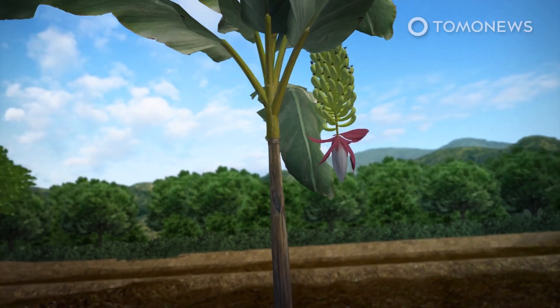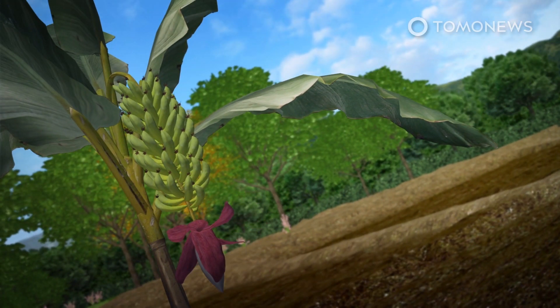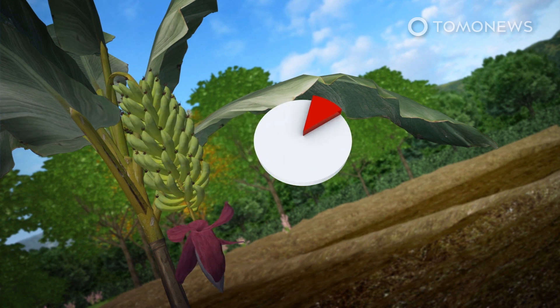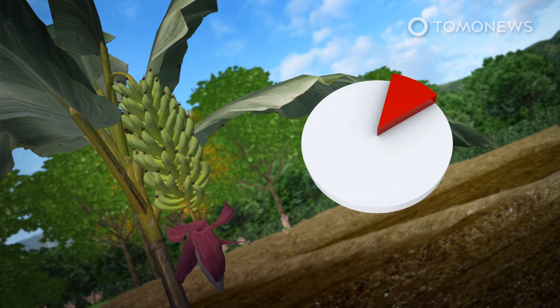According to researchers at Australia's University of South Wales, banana growing can be a highly wasteful process with 88% of the plant being discarded after fruit harvesting.